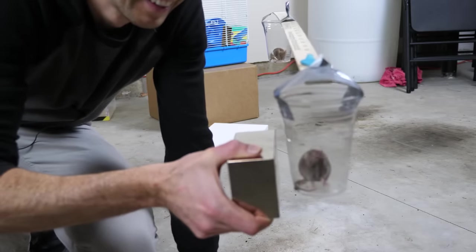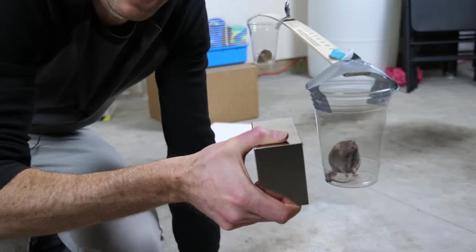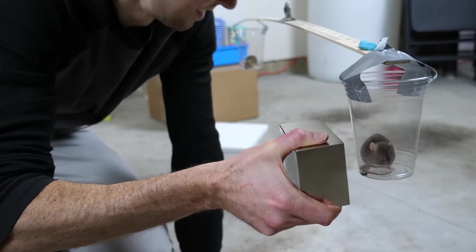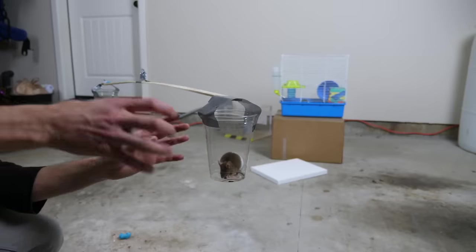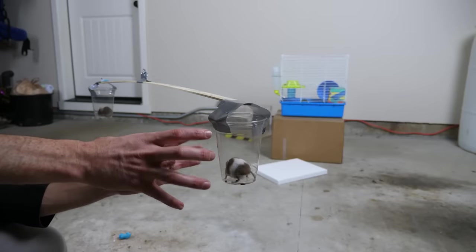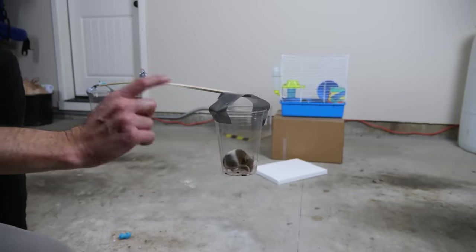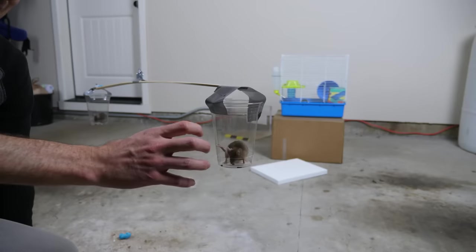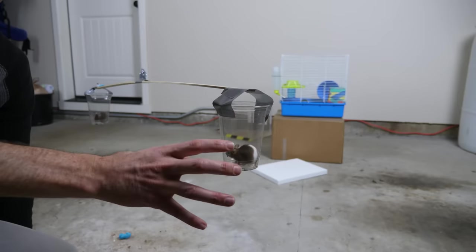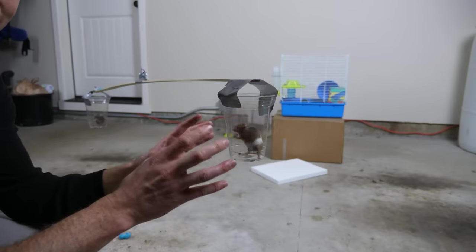See how it's starting to move away? So the mouse is repelling the magnet. So what this is showing here is that animals are diamagnetic. And it's not just this mouse that's diamagnetic. In fact, every material in the world is diamagnetic. So everything repels a magnet.